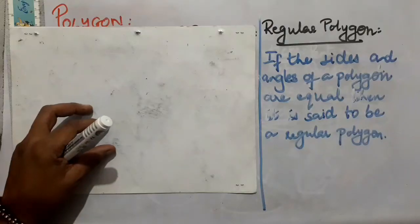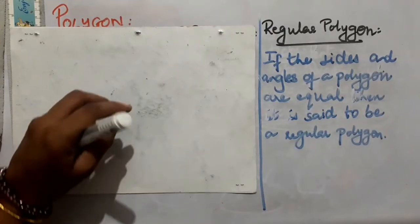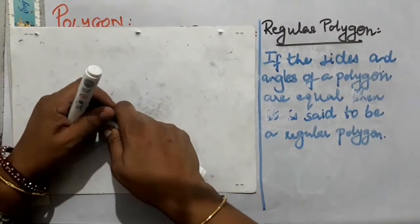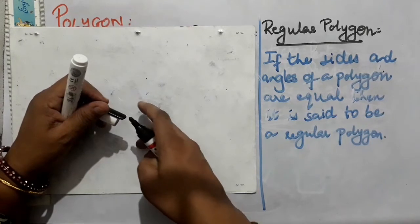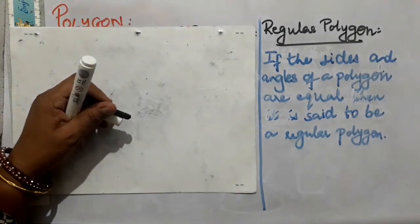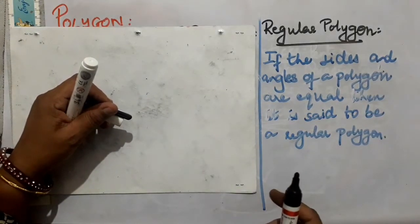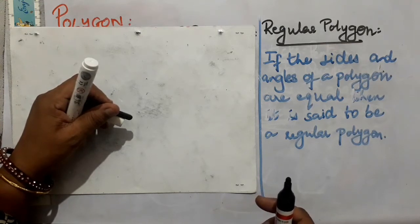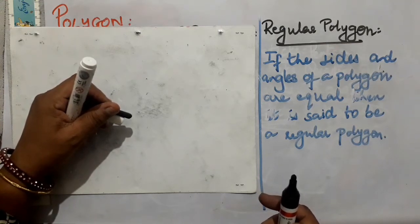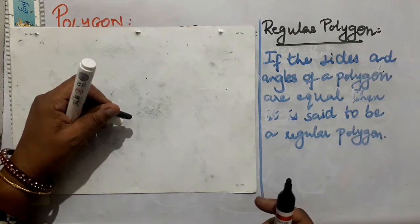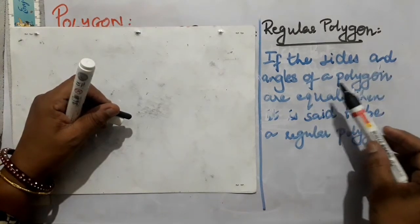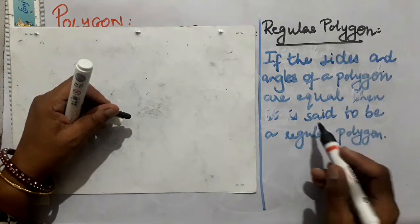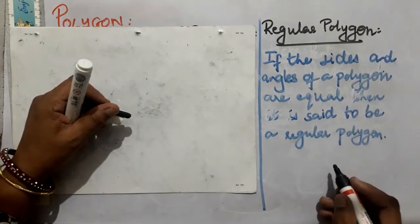It means the polygon with the least number of sides is a triangle. Now, what is a regular polygon? A regular polygon is a polygon where all sides are of equal measurement and the angles are also equiangular.